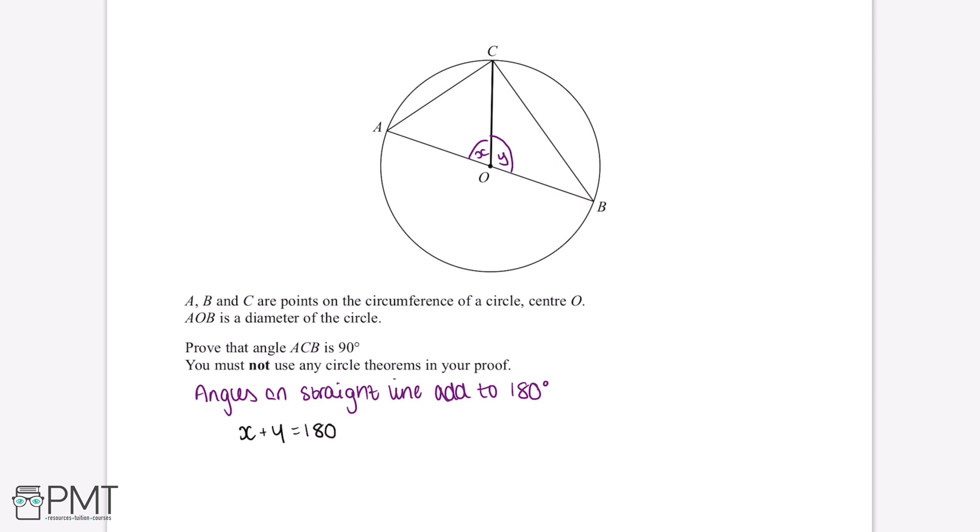Because AOB is the diameter of the circle, this means that AO, OC and OB are all half the length of the diameter, making them a radius and therefore making them equal in length. This means that both of these triangles are isosceles triangles.